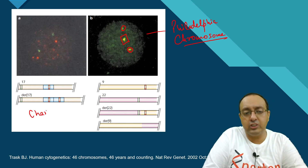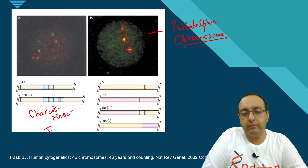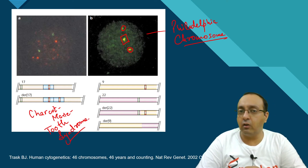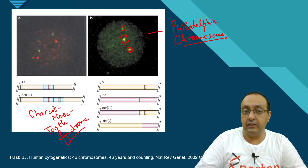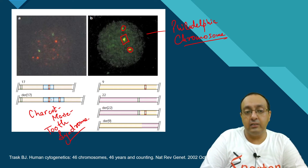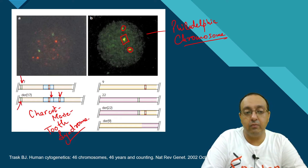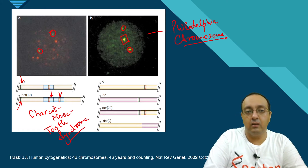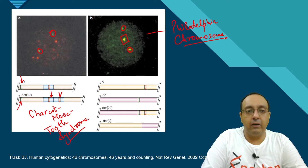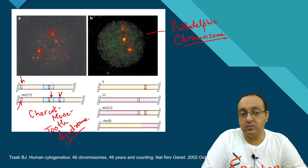Charcot-Marie-Tooth syndrome is caused by duplication of a small fragment on chromosome 17. Here you can see duplication of this fragment: the green probe gives two signals in the normal chromosome, but the derived chromosome 17 — which now has three copies — gives three distinct signals.